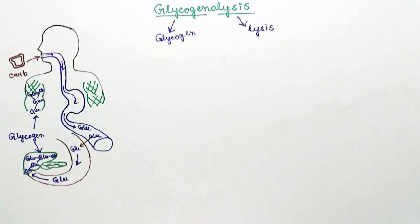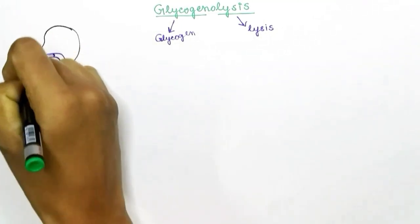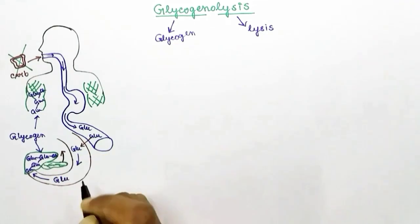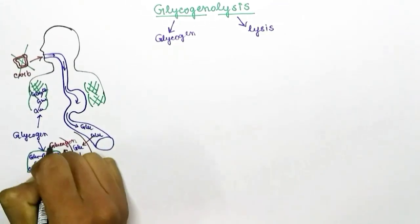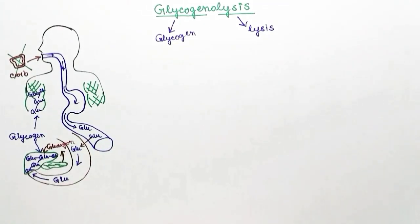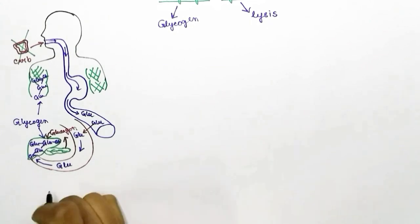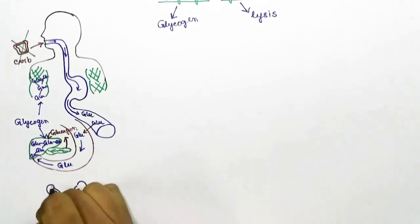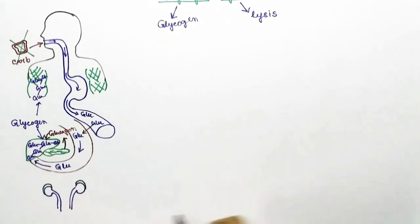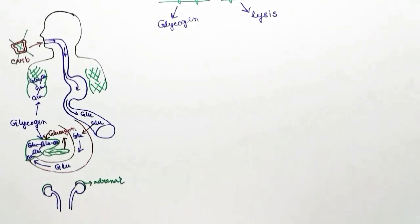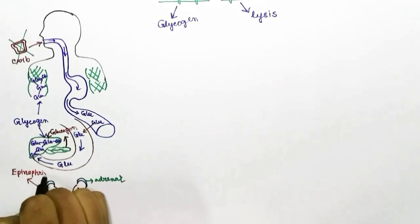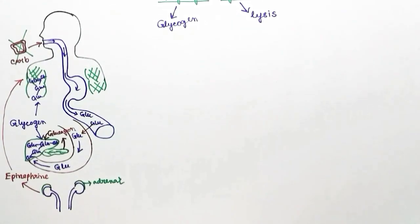When glucose level drops, the pancreas releases a hormone called glucagon, which causes glycogenolysis in the liver. Also, another hormone is released by the adrenal glands — epinephrine — which causes glycogenolysis in muscle cells.